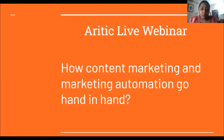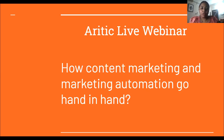Today we will talk about how you can use marketing automation for your content marketing. Marketing automation can bring content to another level, where you can see what kind of content is working for you and what is not. You can see that inside the analytical part. You can use the content you have created across different social segments and platforms, and you can generalize them automatically.